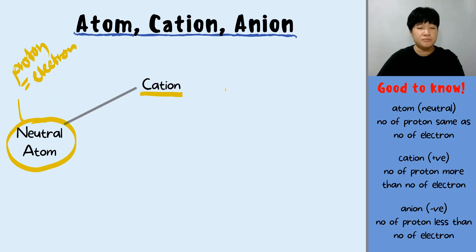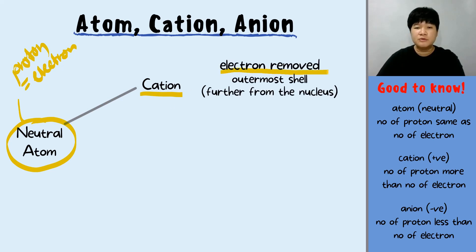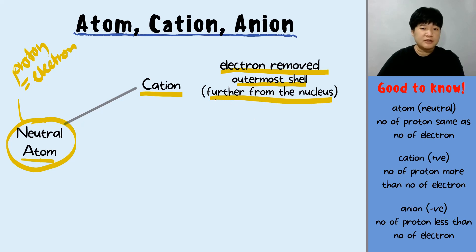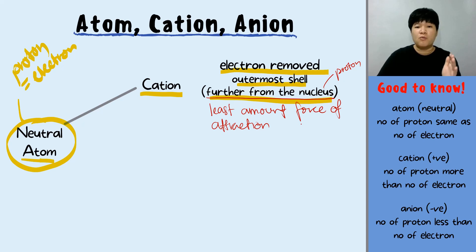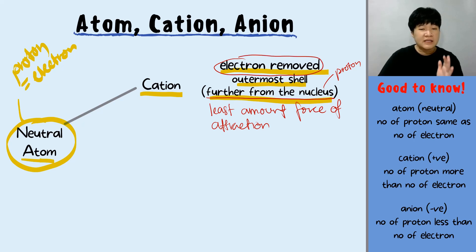How can a cation be formed? A cation is formed when an electron is removed from the neutral atom — from the outermost shell, the shell furthest away from the nucleus. We must remove the electron furthest from the nucleus first because it experiences the least amount of force of attraction. Therefore, it's always easier to remove the electron that is further from the nucleus.